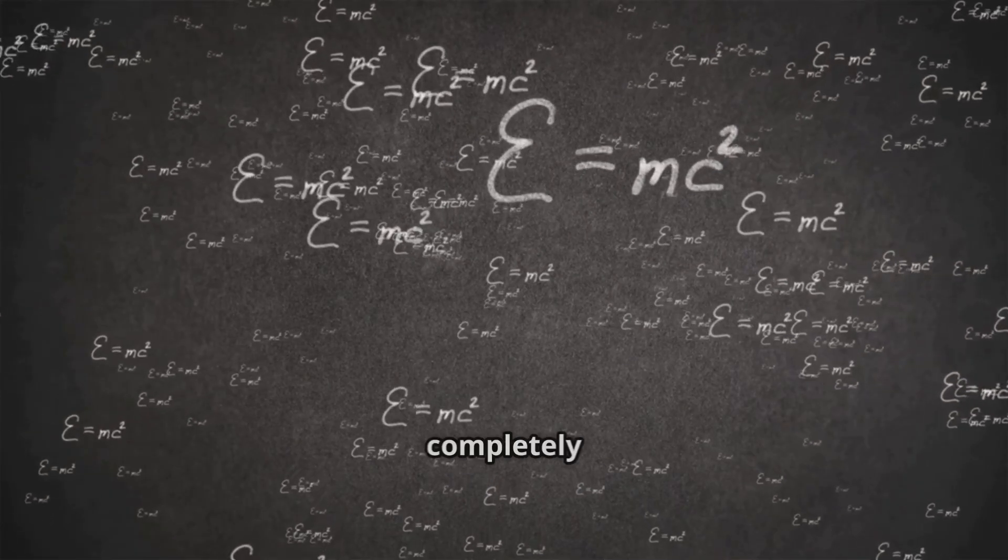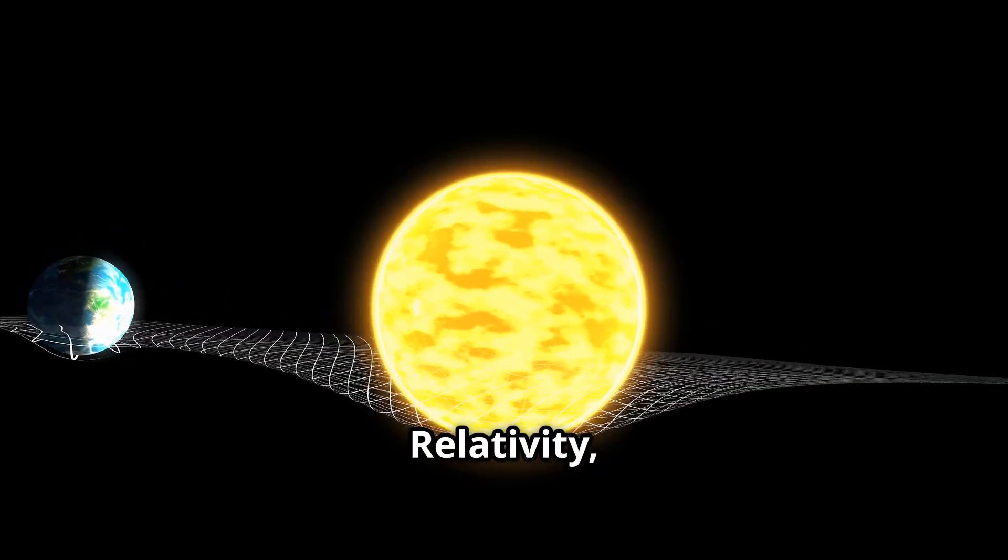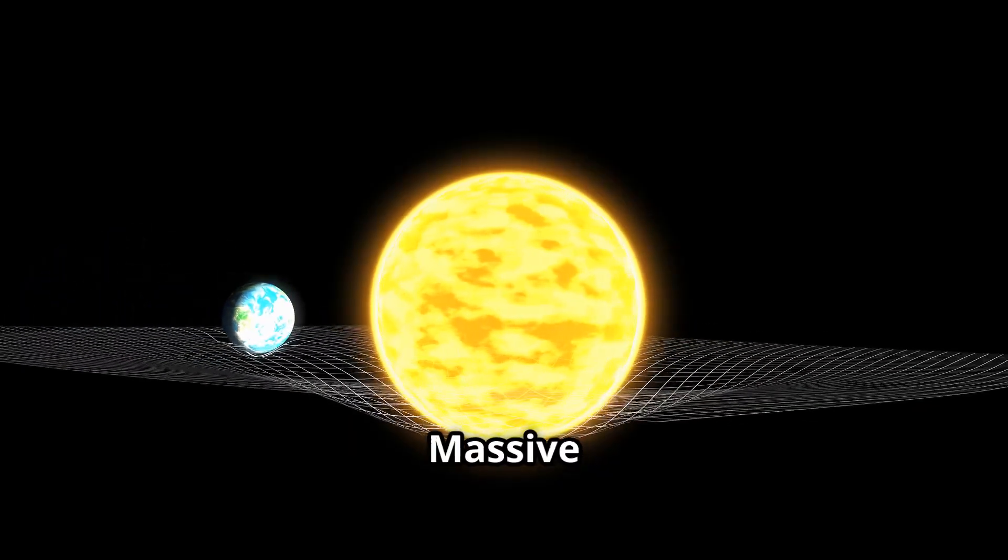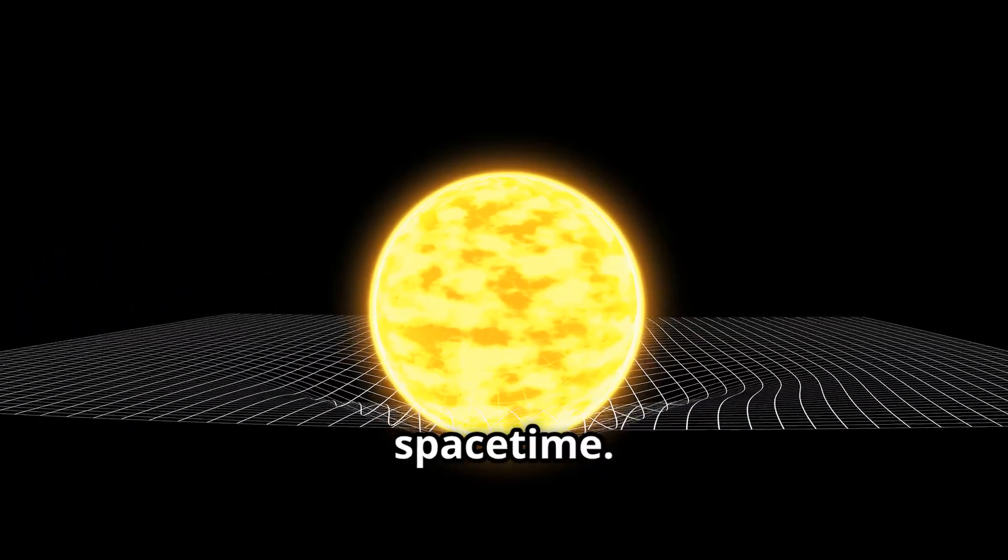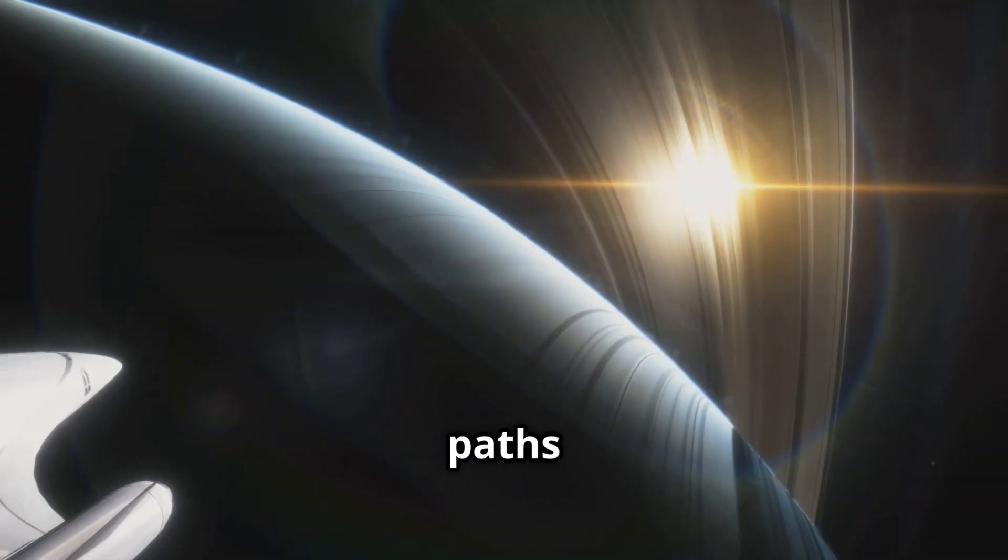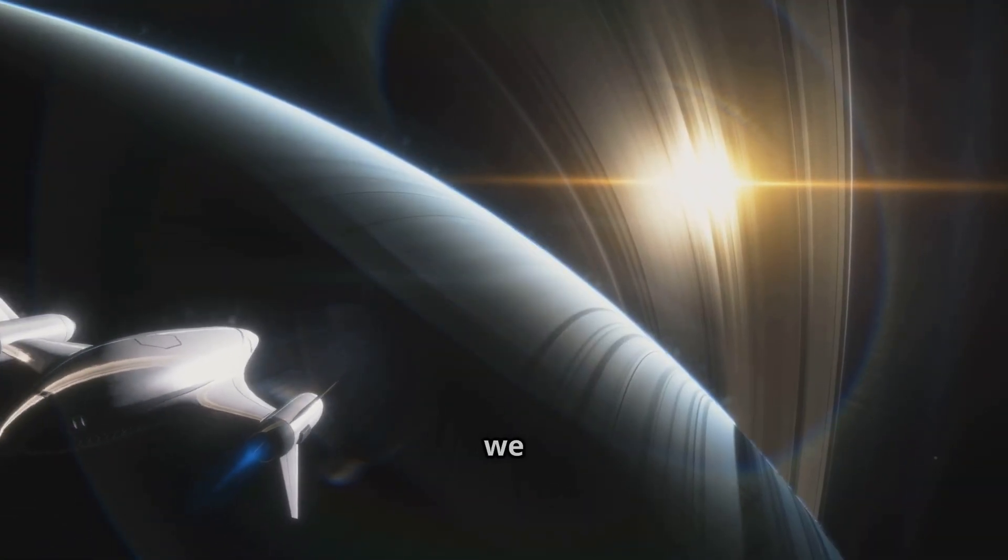Then Einstein offered a completely different story. In general relativity, gravity isn't a force at all. Massive objects bend the fabric of space-time. Objects follow curved paths through this warped space. That's what we call an orbit.